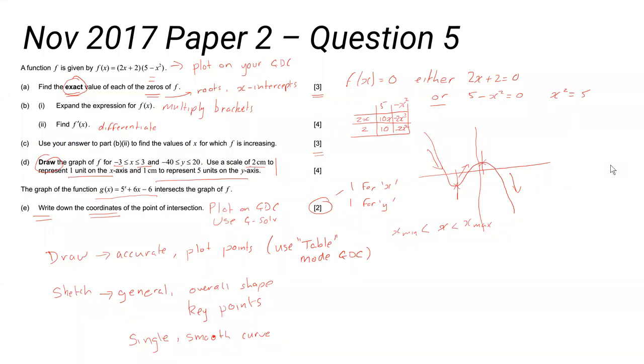Okay, let's have another go then. Paper 2 Question 5. A function f is given by this expression here. Question a says find the exact values of each of the zeros of f. So the zeros are also the roots or the x-intercepts - it's where it crosses the x-axis.